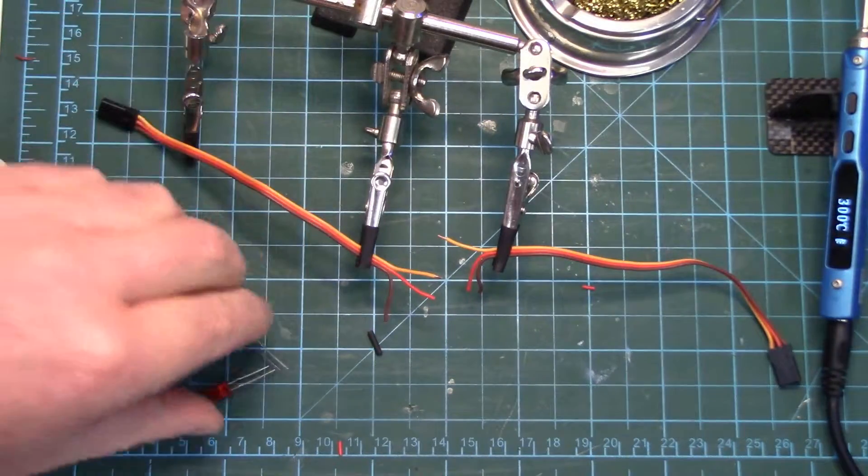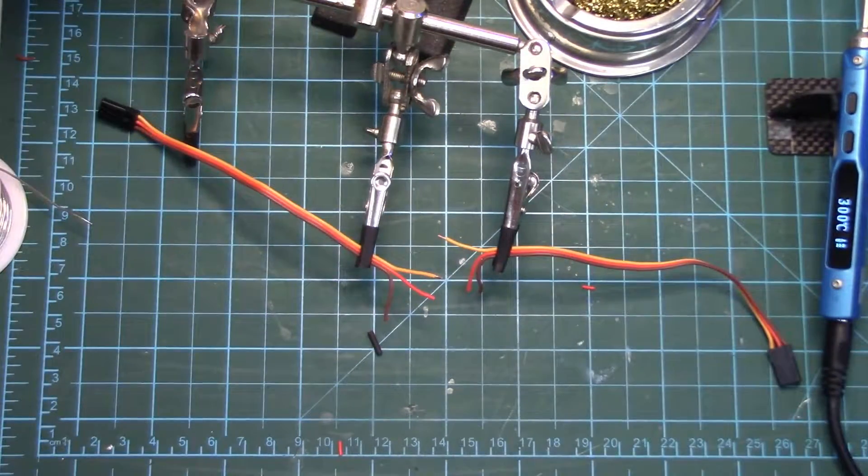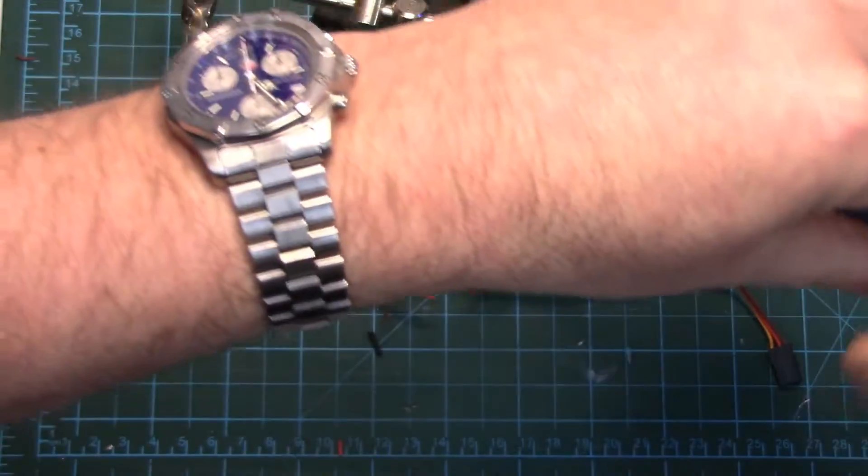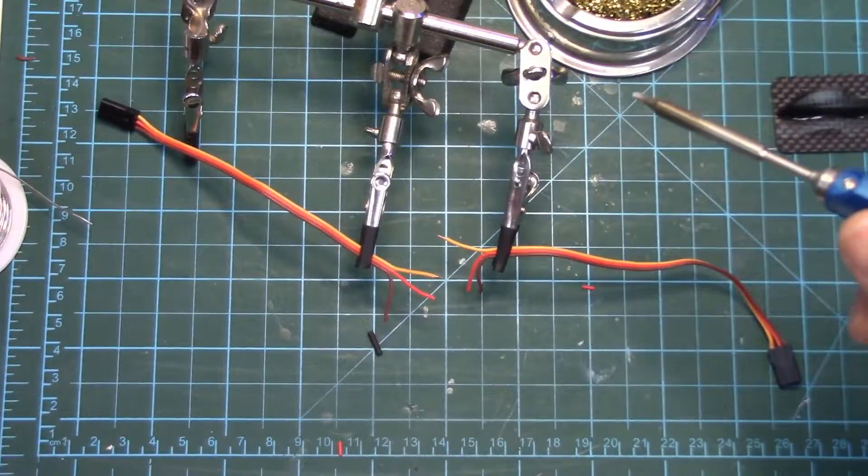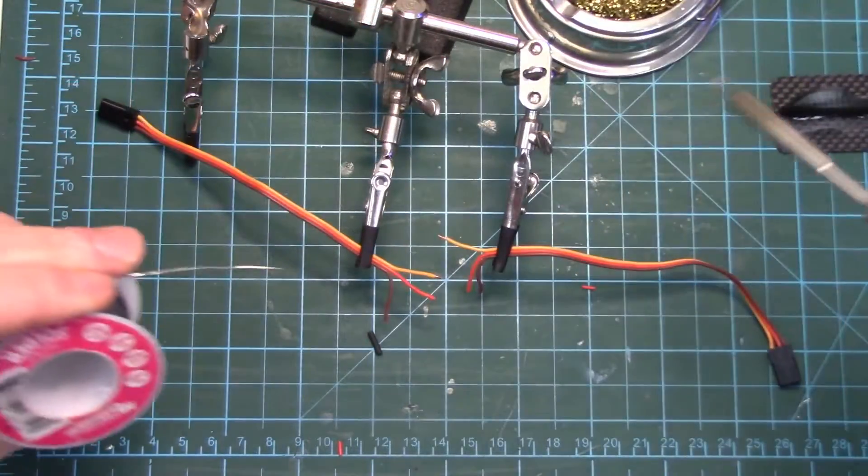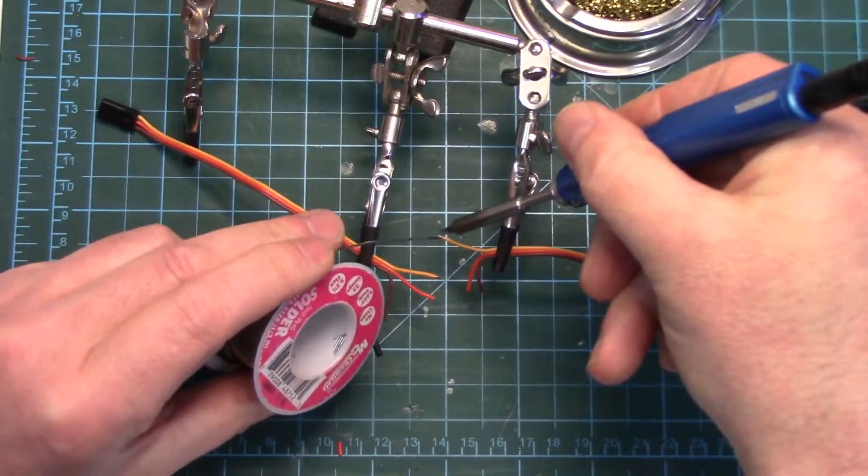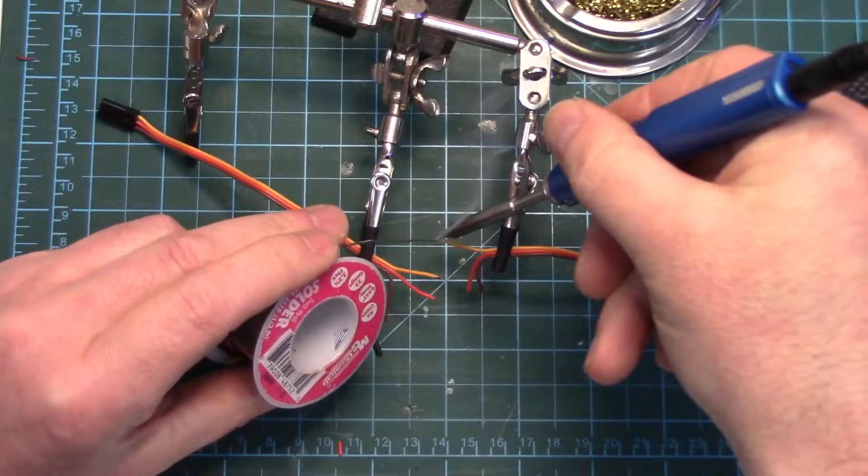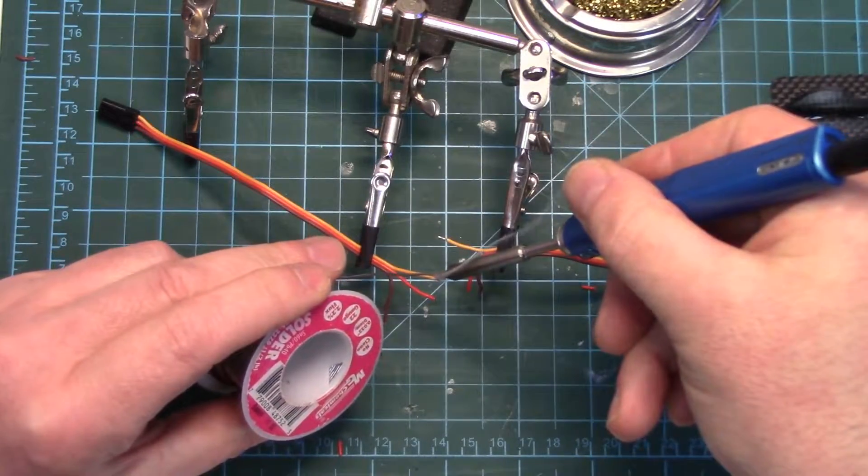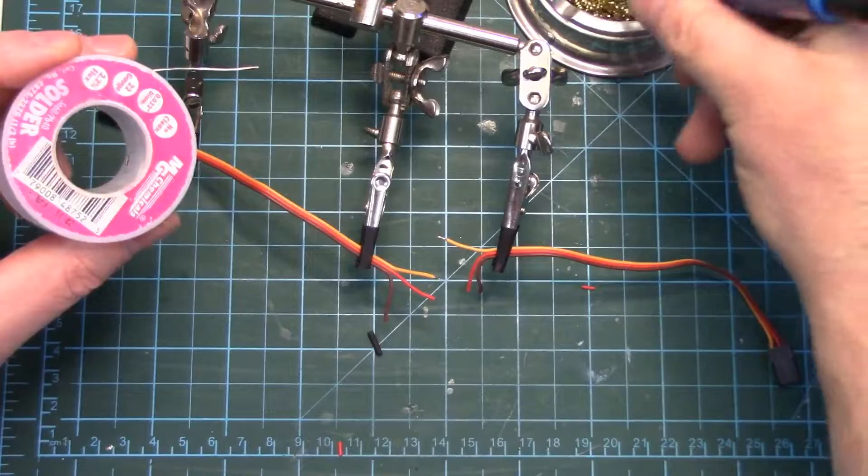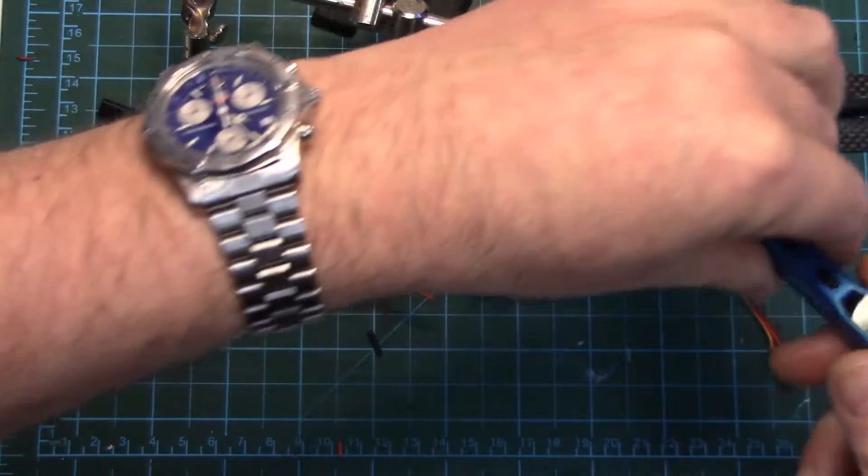So specifically for smaller wire, again this is 26 gauge. I'm just going to solder these two little servo wires together. First thing I do is tin the ends. You want to strip, again you don't need much length. There's probably maybe only a couple millimeters of stripped wire here.